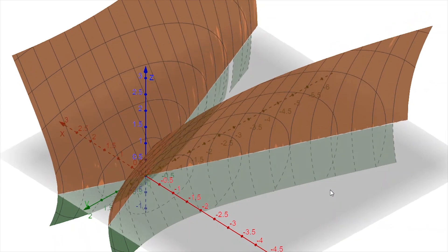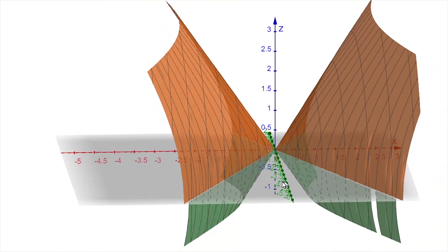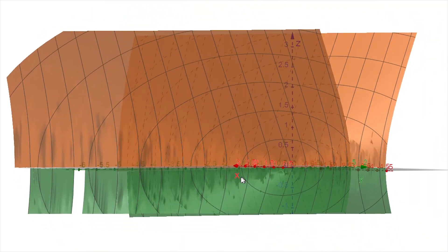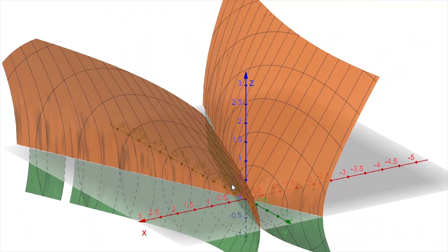So we can see when we rotate around, this is pretty clearly the elliptic cone. Let's bring it back to that standard position.